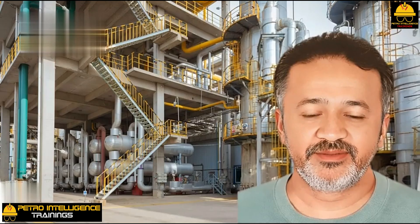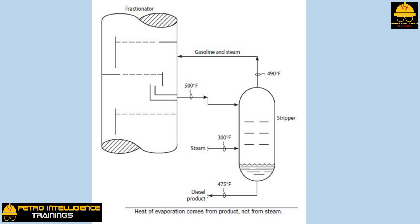Many sidestream steam strippers do not work very well. Operating personnel report that the stripping steam is not effective in removing undesirable lighter components from the stripper feed. One of the main reasons for this poor stripping efficiency is subcooled liquid feed to the stripper. Liquid drawn from any tower or vessel is assumed to be in equilibrium with the vapor phase in the tower or vessel. We say that the liquid is at its bubble point or boiling point.